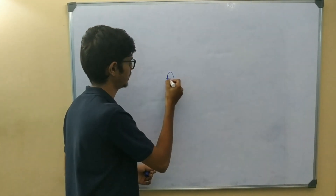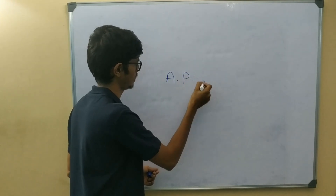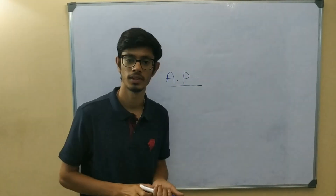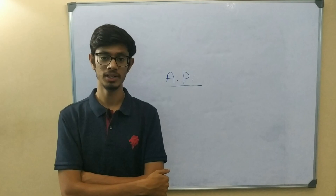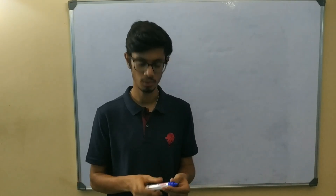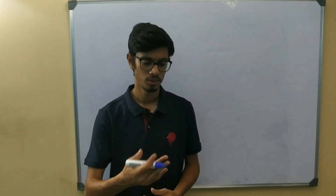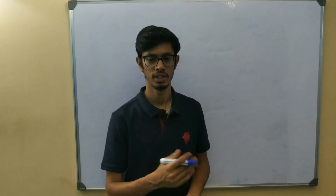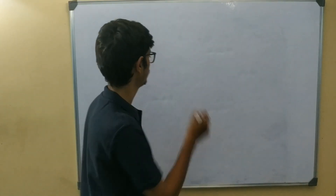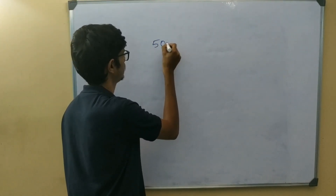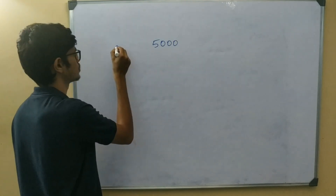Arithmetic Progression — we also write it as AP. Let me explain with an example to help you understand it in the easiest way possible. Suppose you see a part-time job and you get a salary of 5,000 in the first month.